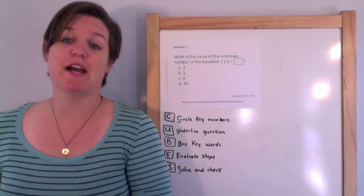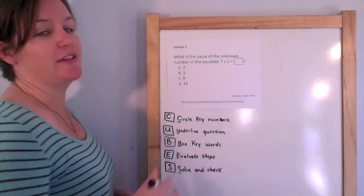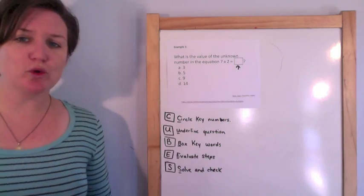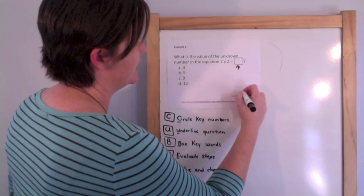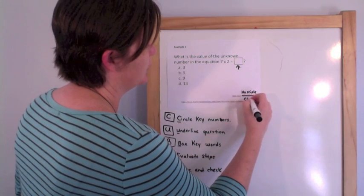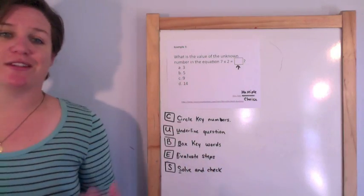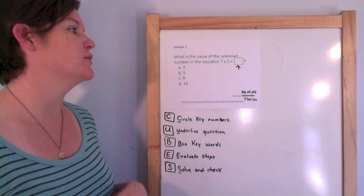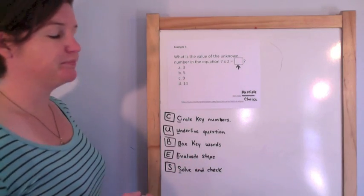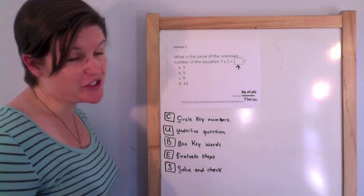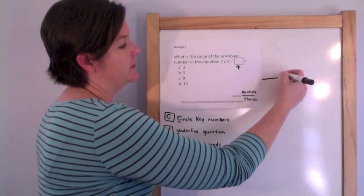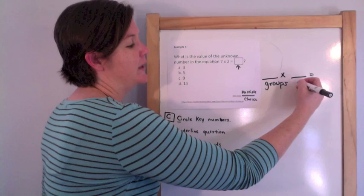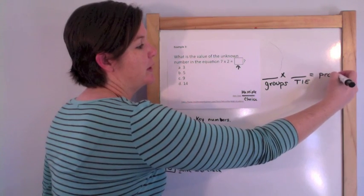Example 3: what is the value of the unknown number in the equation 7 times 2 equals box? This is a multiple choice question. For multiplication, if you've listened to my multiplication Uptown Funk song, you know that number of groups times things in each equals the product. The product is the total. So we've got 7 groups with 2 in each.